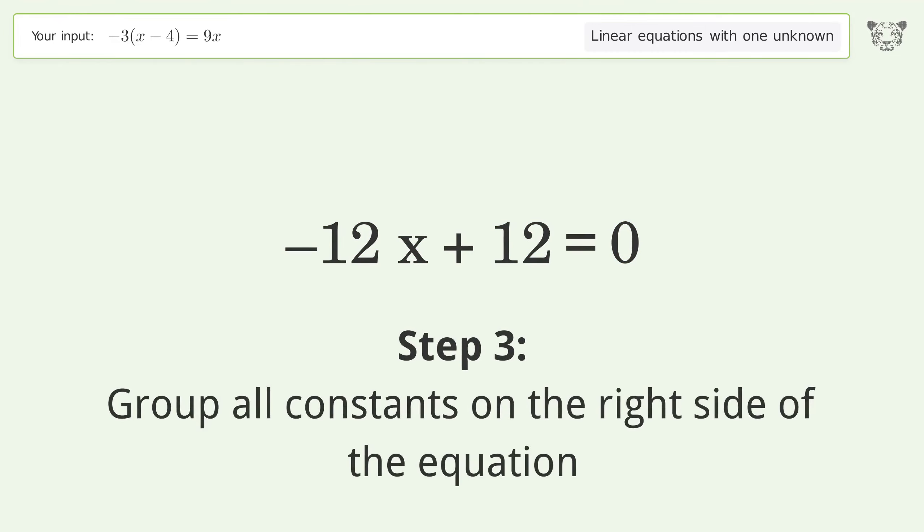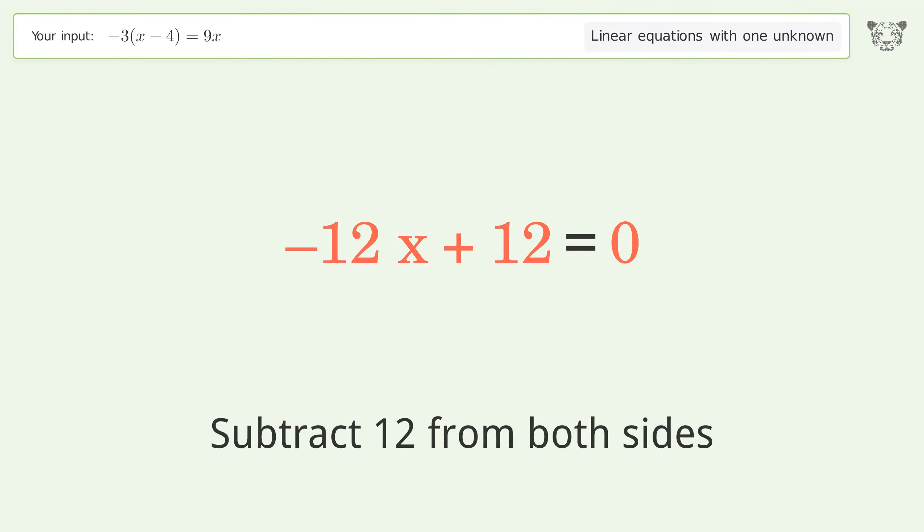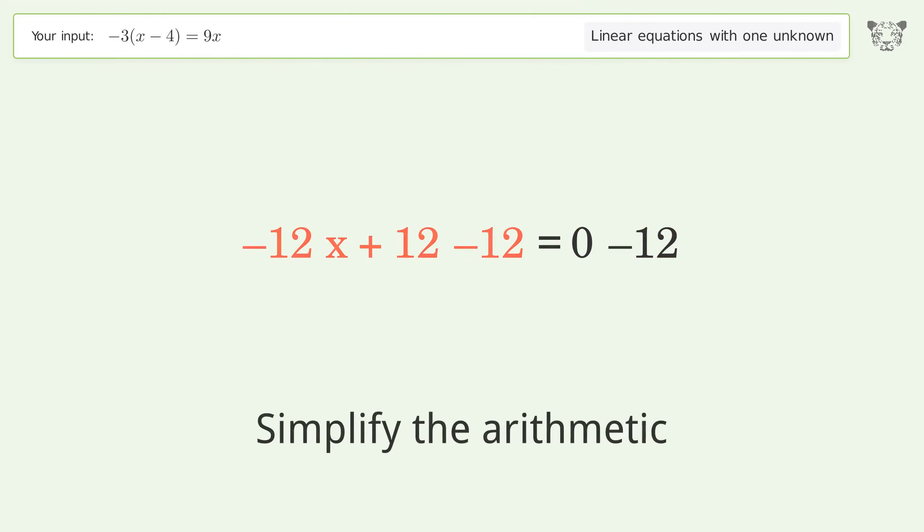Group all constants on the right side of the equation. Subtract 12 from both sides. Simplify the arithmetic.